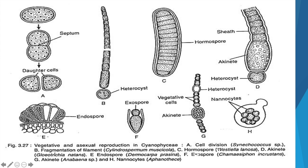You can see a large cell among normal vegetative cells — this is a big akinete cell with a heterocyst at the terminal point, as seen in Gloeotrichia natans. This is an endospore in the case of Dermocarpa. You can also see a small cell budded from the major vegetative cell — the exospore in Chamaesiphon encrustans. In Anabaena species, a large akinete with thick walls is visible alongside normal small vegetative cells and a heterocyst, as well as small nanocytes in Aphanothece.